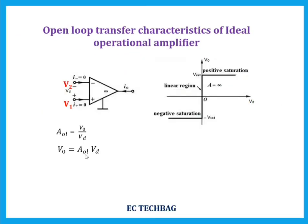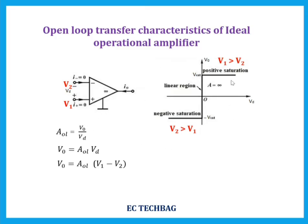We have V0 equal to AOL times Vd, where Vd is V1 minus V2. Depending on the values of V1 and V2, we get either plus V-saturation or minus V-saturation. If V1 is greater than V2, we get plus V-saturation. If V2 is greater than V1, we get minus V-saturation. Due to the high gain, the output is either plus V-saturation or minus V-saturation, showing only two values.